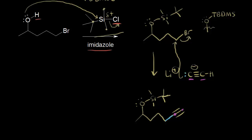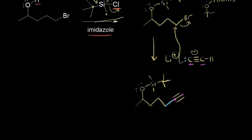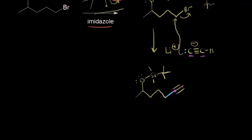Now that we've done the desired reaction, we can take off our protecting group to form our target compound. We need something that reacts selectively with the silicon, so we're going to use tetrabutylammonium fluoride — TBAF — which is a good source of fluoride anions. Fluoride is normally an extremely poor nucleophile, but it is actually selective for silicon.